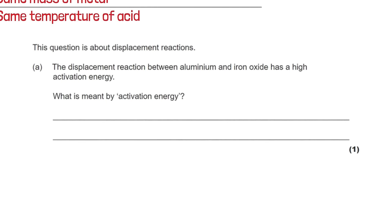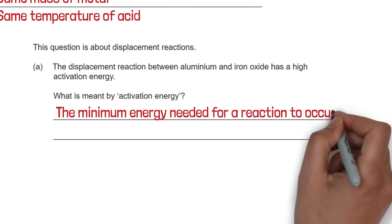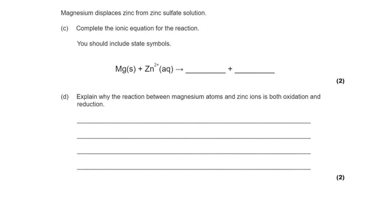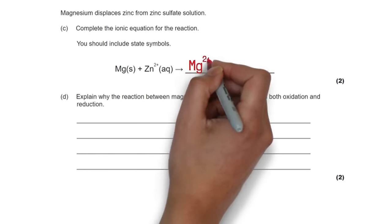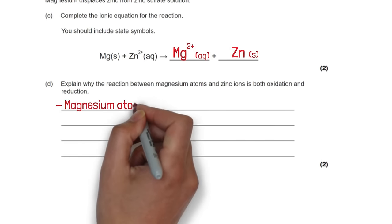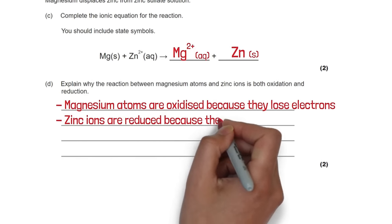A question about displacement reactions between aluminium and iron oxide asks: what is activation energy? It is the minimum amount of energy needed for a reaction to occur. Magnesium displaces zinc from zinc sulfate solution. The ionic equation is: Mg + Zn²⁺ → Mg²⁺(aq) + Zn(s), because magnesium is more reactive. Magnesium atoms are oxidised because they lose electrons, and zinc ions are reduced because they gain electrons — making this both an oxidation and reduction reaction.